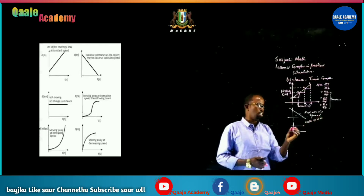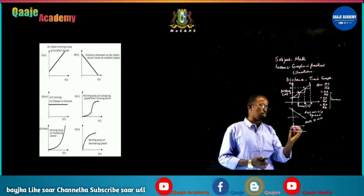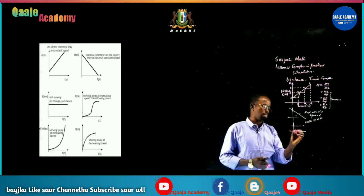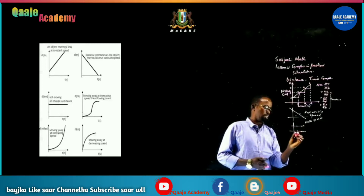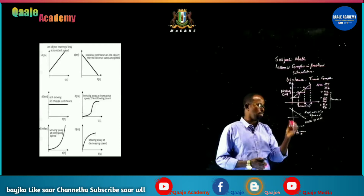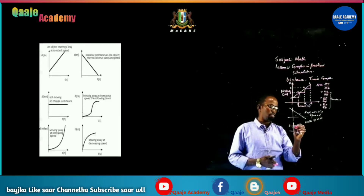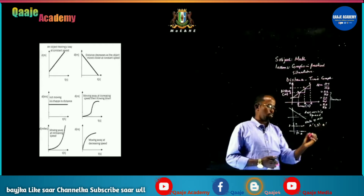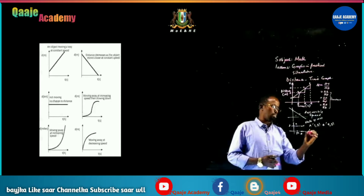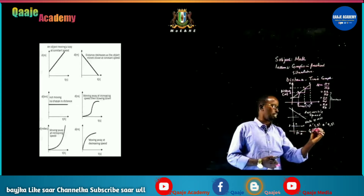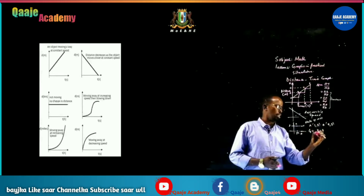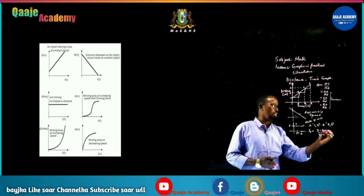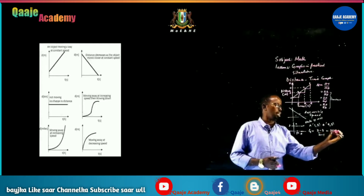For the stationary graph, let's take points: call this one a, with coordinates (1,3) and b at (2,3). The gradient equals changing y divided by changing x, so 3 minus 3 divided by 2 minus 1, which gives 0 divided by 1. The answer is zero — so the gradient is zero.